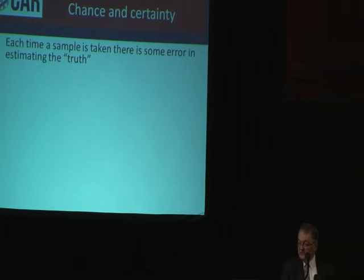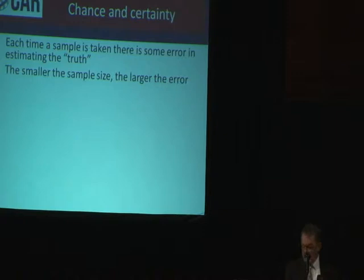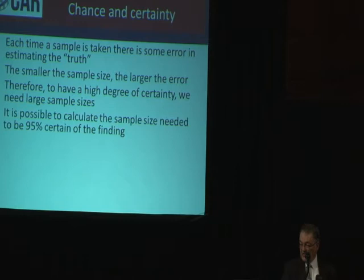Each time a sample is taken there is some error in estimating what the true value is. The smaller the sample size the larger that error will be. Therefore to have a higher degree of certainty we need large sample sizes. One of the things that we can do is to estimate what sample size would be needed to be 95% sure that we have the right answer.